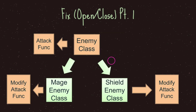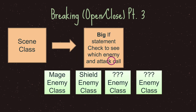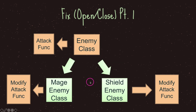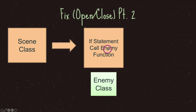In our previous example, notice how both classes have an attack function. Because they share similar methods, we can go ahead and create a base class with the attack function, and then have our mage and shield enemy classes inherit from the enemy class. In our subclasses we can modify the attack function. And in our scene class, we have an if statement that only checks if our object is of type enemy, and if it is, we call the attack function.